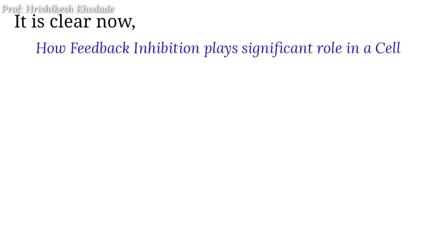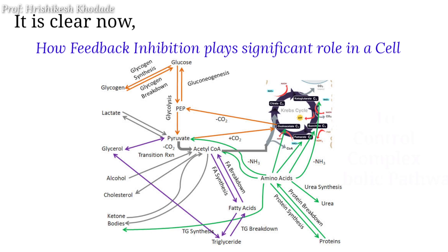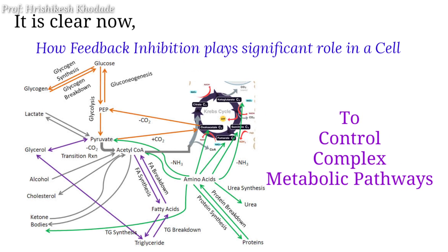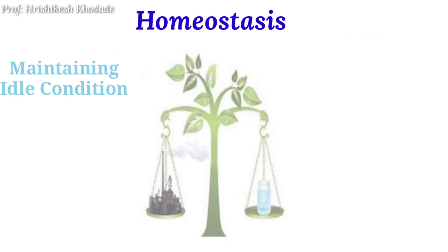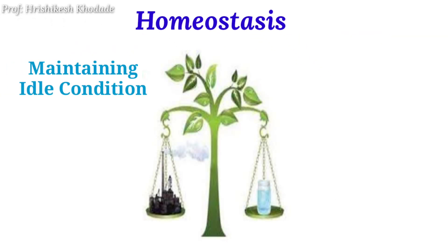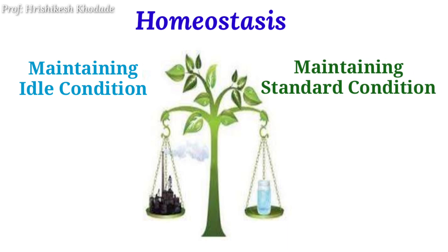With this example, I hope it is clear to you how feedback inhibition plays an important role in a cell for controlling the metabolic pathways. This study comes under the homeostasis phenomenon — the maintenance of the ideal or standard condition of a cell or body.